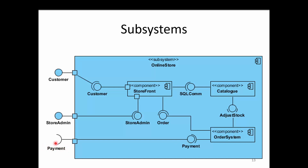The payment interface comes from outside the subsystem as payment data, and the adjusted stock interface is provided through the catalog component. The order system component will provide an 'order' interface to the storefront. The storefront component requires two interfaces: the order interface provided by the order system, and the SQL command interface provided by the catalog component. The storefront component will in turn provide two interfaces named 'store admin' and 'customer', which are passed outside the subsystem.